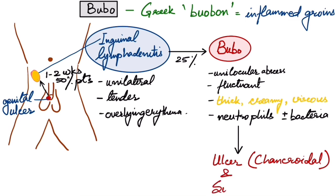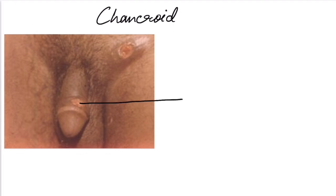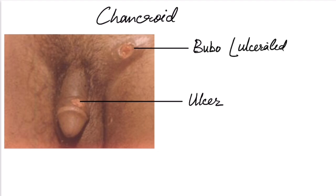The males are more affected than females by bubo. Now this is the clinical picture of chancroid. This is the ulcer with characteristic morphology. This is the bubo which has ulcerated. We can see a small kissing ulcer here. Probably it has spread from the penile ulcer from here to here.